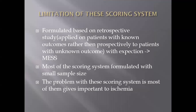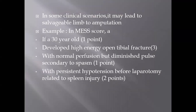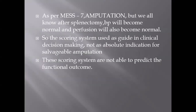The limitations of these scoring systems are that they are formulated based on retrospective rather than prospective studies, most with small sample sizes. All these scoring systems give considerable weight to ischemia, which in some clinical scenarios may lead to unnecessary amputation of a salvageable limb. For example, using MESS score in a 30-year-old male with high energy tibial fracture, diminished pulse secondary to spasm, and persistent hypotension secondary to splenic rupture — the score comes to 7, but the hypotension is due to splenic rupture; after laparotomy and splenectomy, perfusion becomes normal. So we cannot decide salvageability based solely on this scoring system, and functional outcome cannot be predicted either.